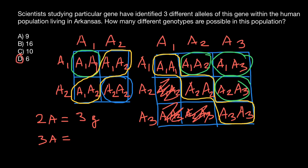Watch this video till the end because we are going to figure out a formula. Next time, for example, if the question involves not three but say 27 different alleles, it would be very tedious to build such a large Punnett square. But we can find an answer within minutes. We just have to figure out the formula. Let's say X stands for the number of alleles. According to our Punnett squares, if we have X alleles, we have X squared total combinations.